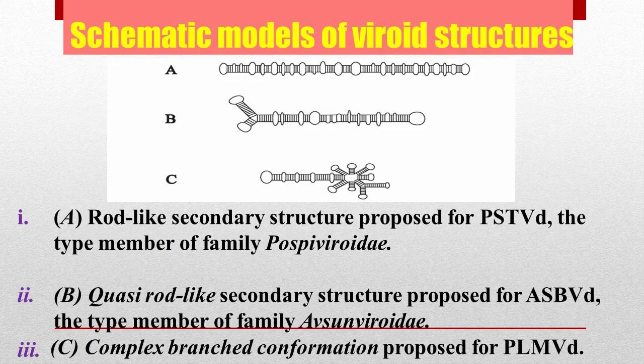Here is the schematic model of viroid structure. A is the rod-like secondary structure proposed for PSTVd. B is the quasi-rod-like structure proposed for ASBVd. C is the complex branched conformation proposed for PLMVd.